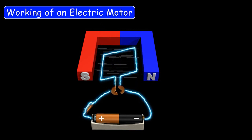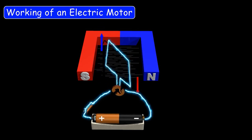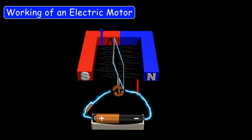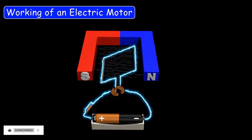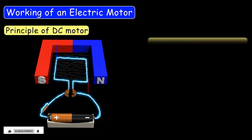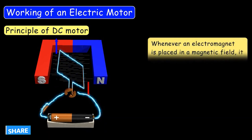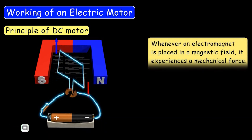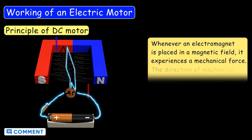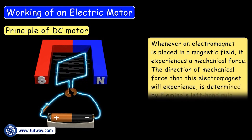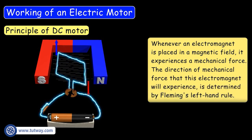When current flows through the coil, it produces a magnetic field around it and starts behaving like an electromagnet. So this electromagnet is lying inside the magnetic field of the permanent magnet. Now comes the working principle of a DC motor. Whenever an electromagnet is placed in a magnetic field, it experiences a mechanical force, and the direction of this force is determined by Fleming's left-hand rule.